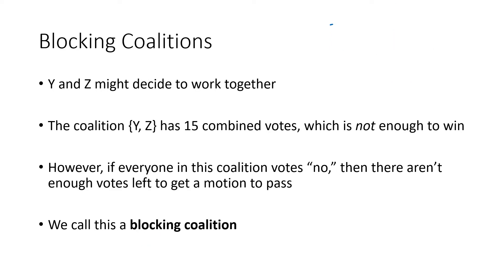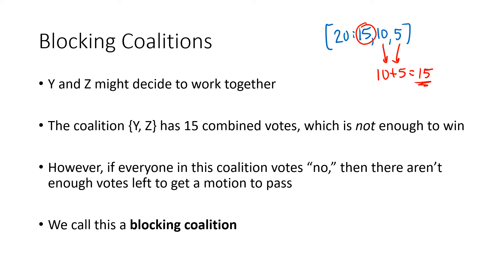What about Y and Z? Y and Z are the 10 and the 5 voters. Together they have 10 plus 5, which is 15 votes. That's not enough to win — that's less than the quota — so that's not a winning coalition. But if Y and Z work together and vote no, the remaining voter X doesn't have enough votes to get anything to pass. So we call that a blocking coalition. It's easier to block than to win because you don't have to meet the quota; you just need enough votes to prevent anyone else from passing something.